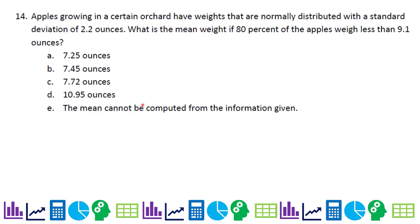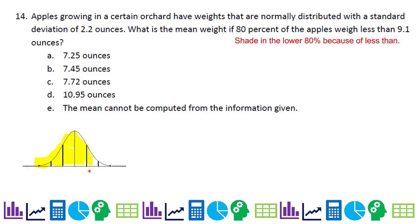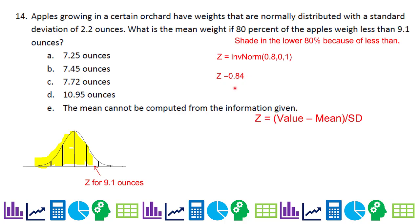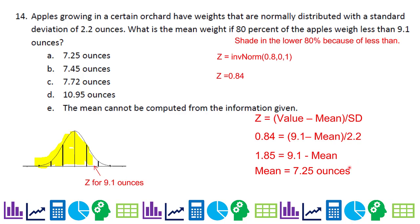Number 14: apples growing in an orchard have weights normally distributed with a standard deviation of 2.2 ounces. What is the mean weight if 80% of apples weigh less than 9.1 ounces? We must use the standardized model because we don't know the mean. We want 80% to the left; using Statlet, the Z-score for 9.1 ounces is 0.84. Substituting into Z = (value − mean) / SD and solving for the mean gives 7.25 ounces.